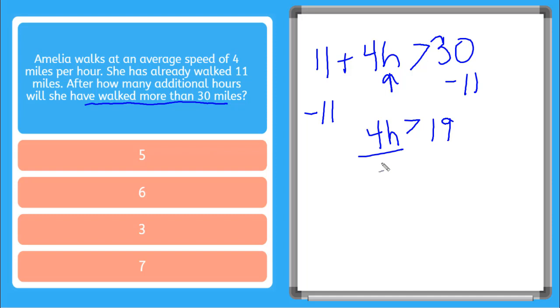And then we have to divide both sides by 4 to get that H by itself. So now we have H is greater than 19 over 4. 19 over 4 is equal to 4.75.